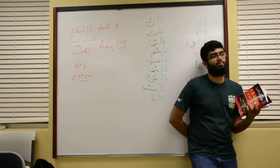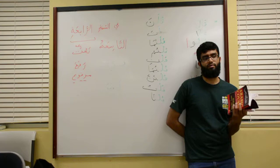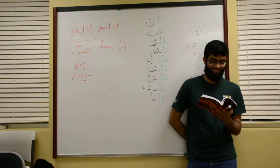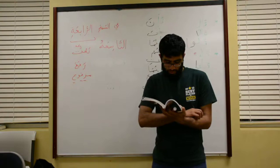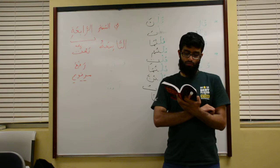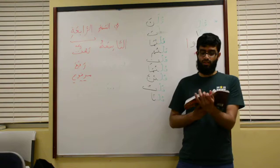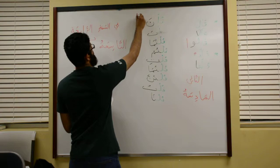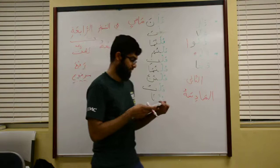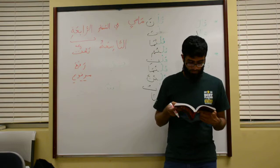So let's read lesson four. In this lesson, we learned the following — we're reading page 13 on the back of the English key. Number one: the verb in the Madi. The Feil Madi means past tense. For example, zahabah means he went, and raja'ah means he returned.